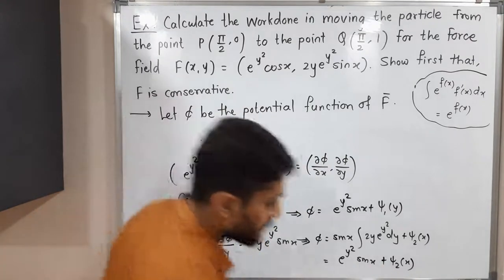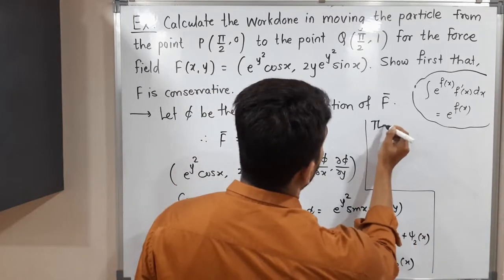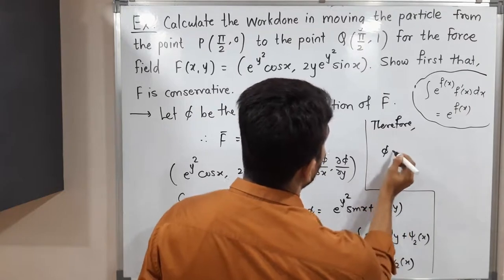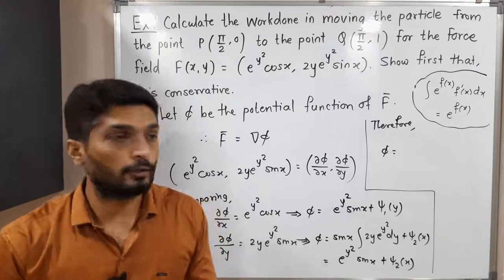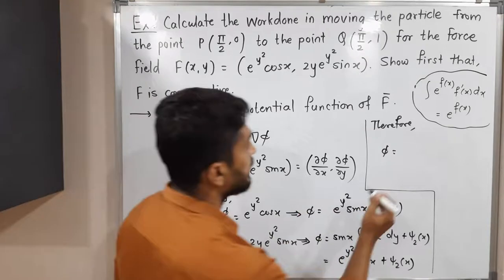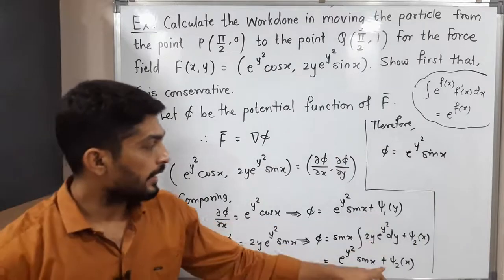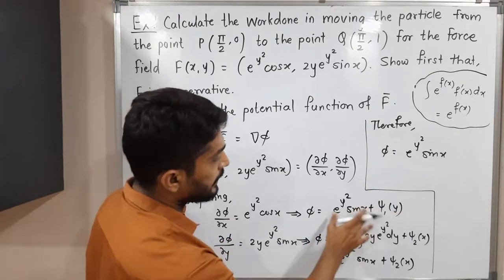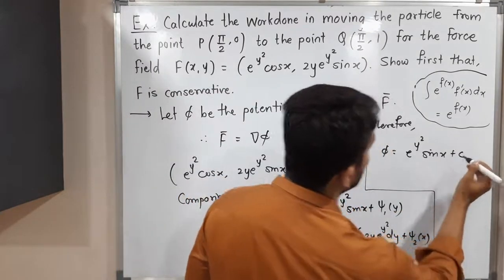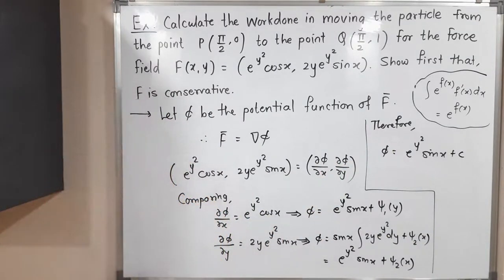Two different expressions for φ are obtained. Writing the common part of both: e^(Y²)·sinX. There is no uncommon part from either expression, so we simply write C as the constant of integration. Therefore, the required potential function of the given field F bar is φ = e^(Y²)·sinX + C.